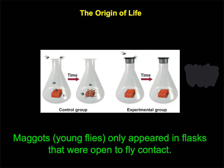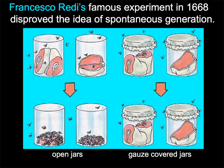His conclusion was that maggots and flies only appeared in flasks that were open to fly contact. That indicated, as we now know and understand, that life does not just arise spontaneously from non-living material — these flies came from pre-existing flies. There's another diagram you might find if you Google Francisco Redi's experiment: the control group has meat open to fly contact and the experimental group is closed. The independent variable is whether the jar is sealed or not, and the dependent variable is whether or not we see maggots.